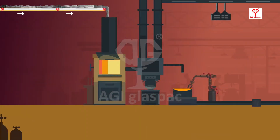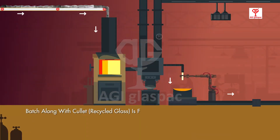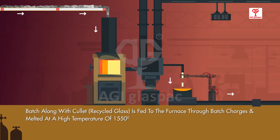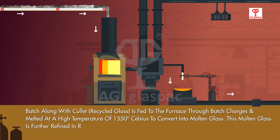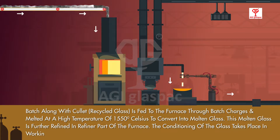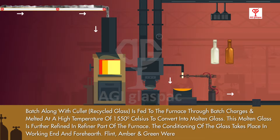Stage 2: Furnace Melting, Refining, and Conditioning. The batch, along with colorants, is fed to the furnace through batch chargers and melted at a high temperature of 1550 degrees Celsius to convert into molten glass. This molten glass is further refined in the refiner part of the furnace. Conditioning of the glass takes place in the working end and forehearth.